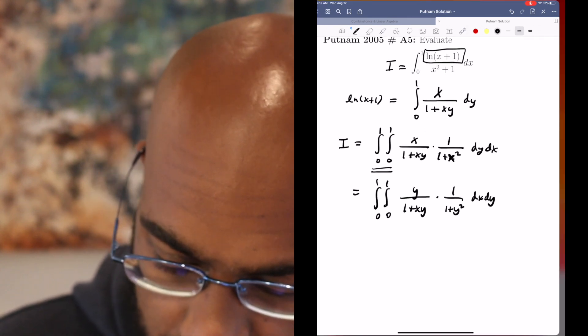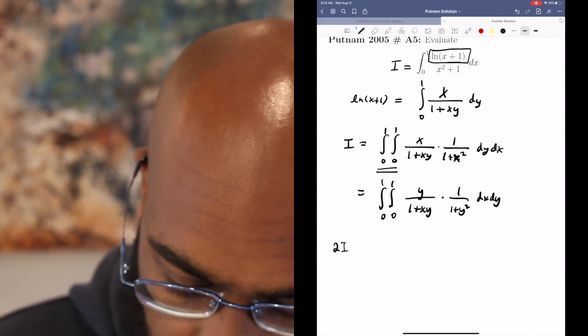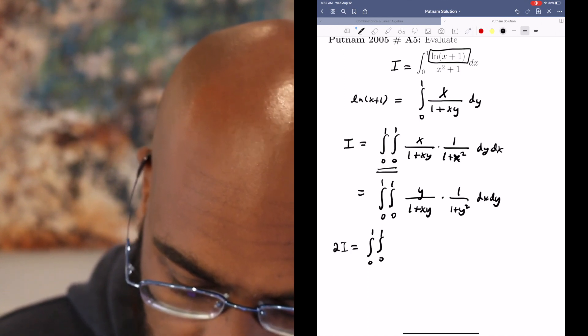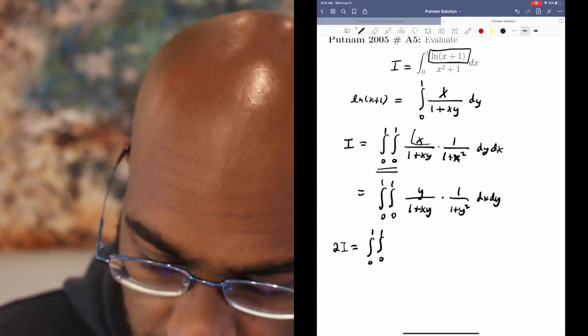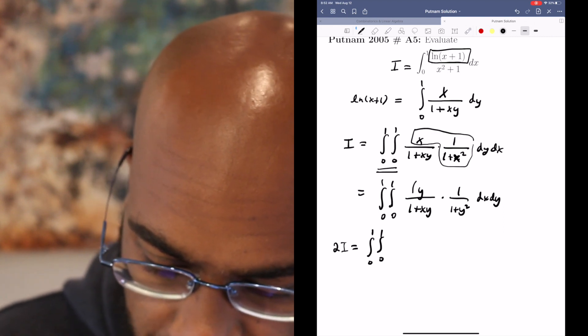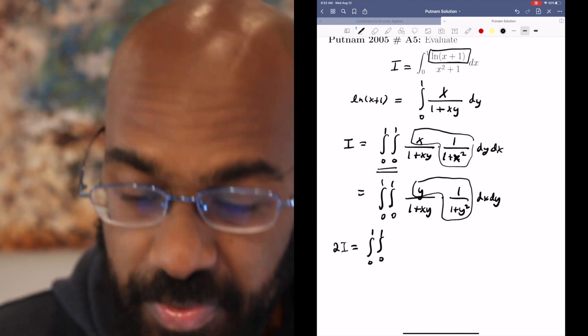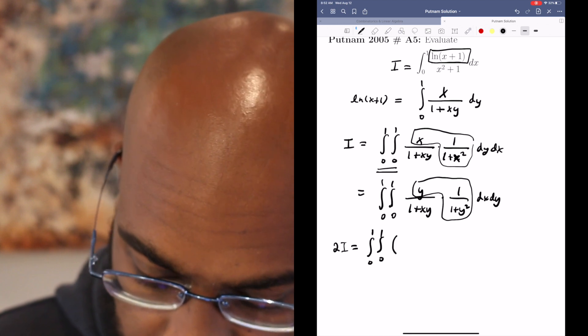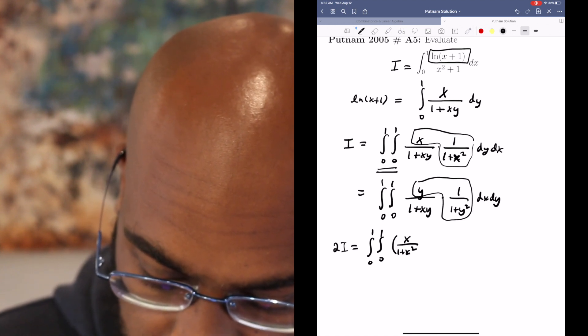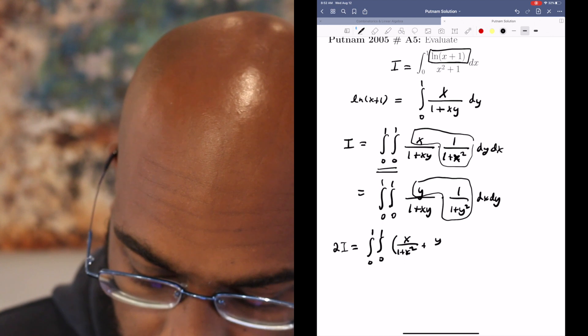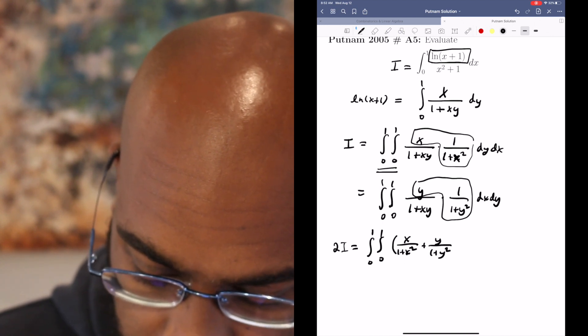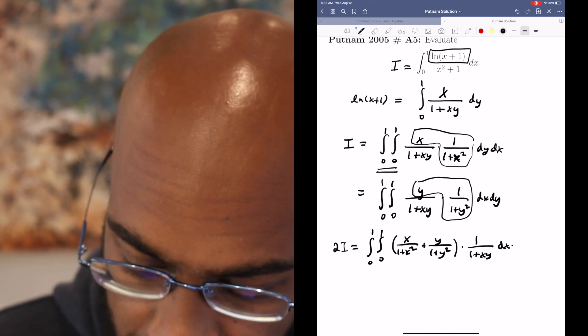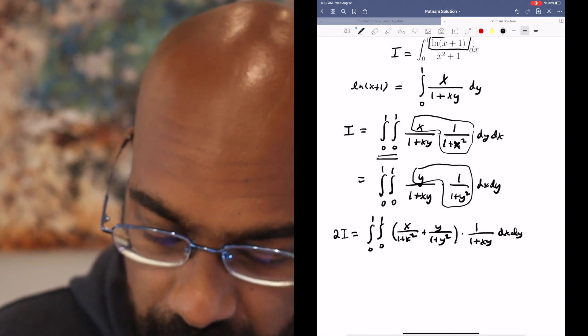If we add these two quantities, twice the integral in question is the integral from 0 to 1 integral from 0 to 1 of the sum of these things. If we take these pieces here, they look different from each other, and we have this common 1 over 1 plus xy piece. So we'll have something like x over 1 plus x squared plus y over 1 plus y squared times the quantity 1 over 1 plus xy dx dy.